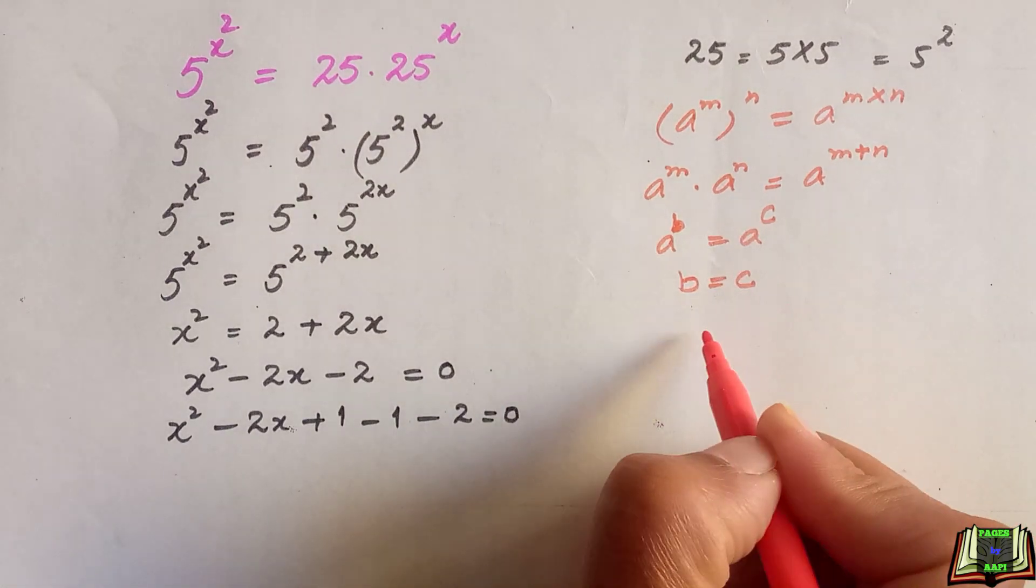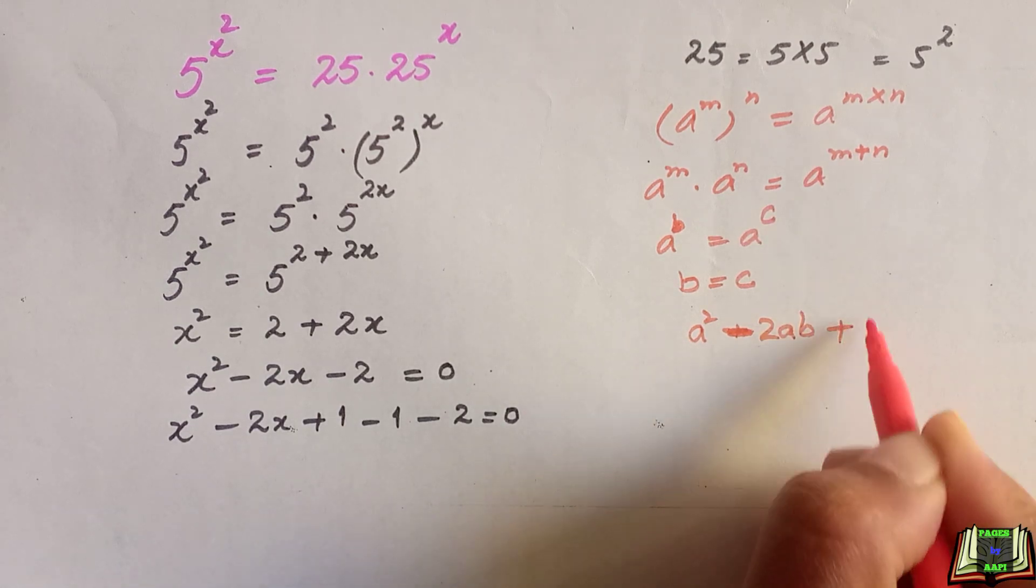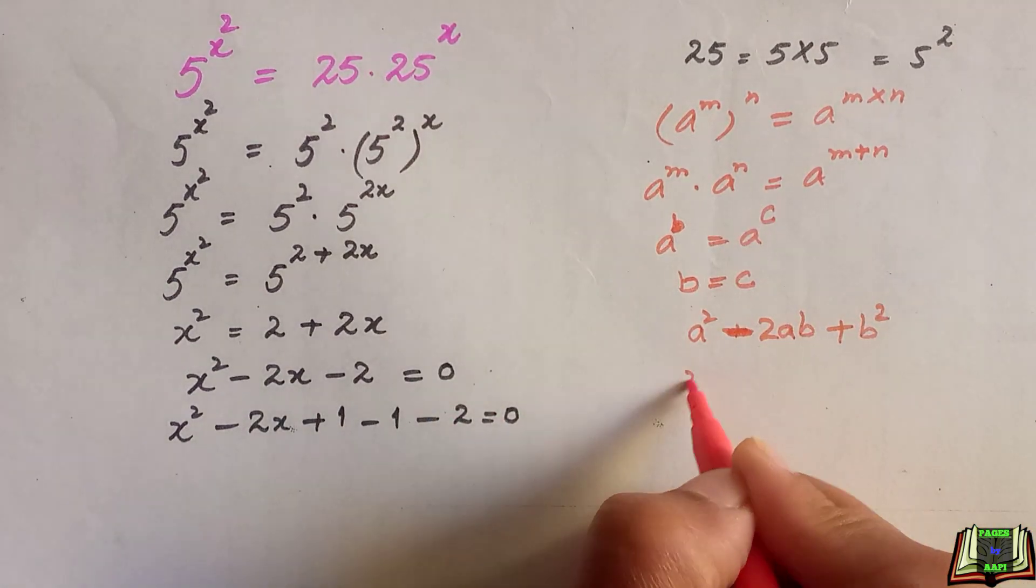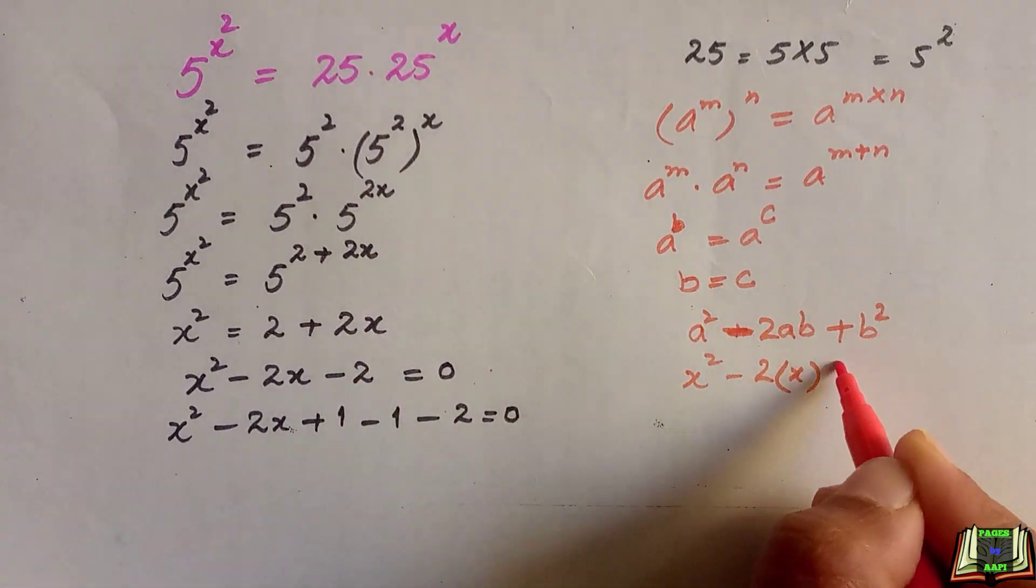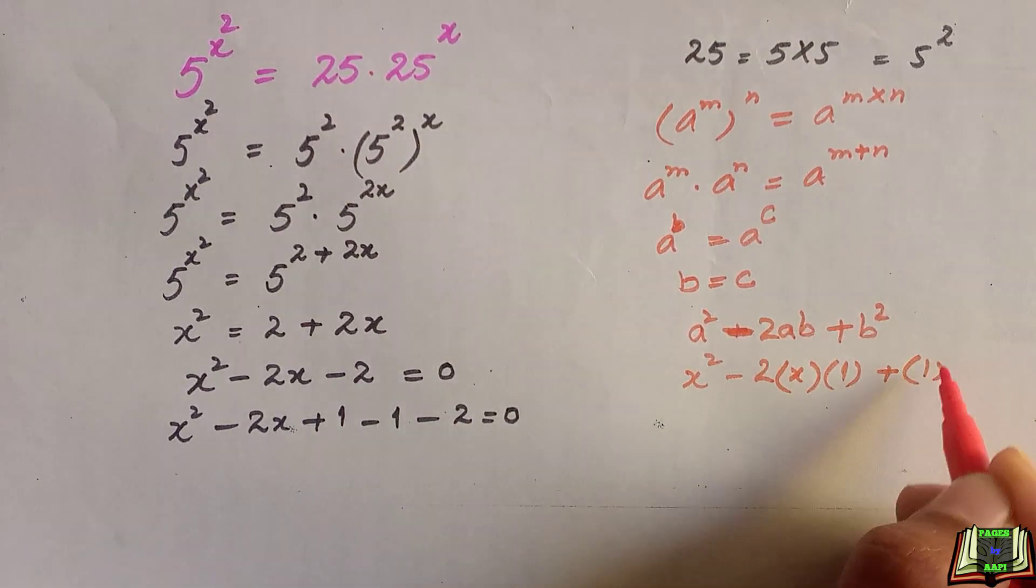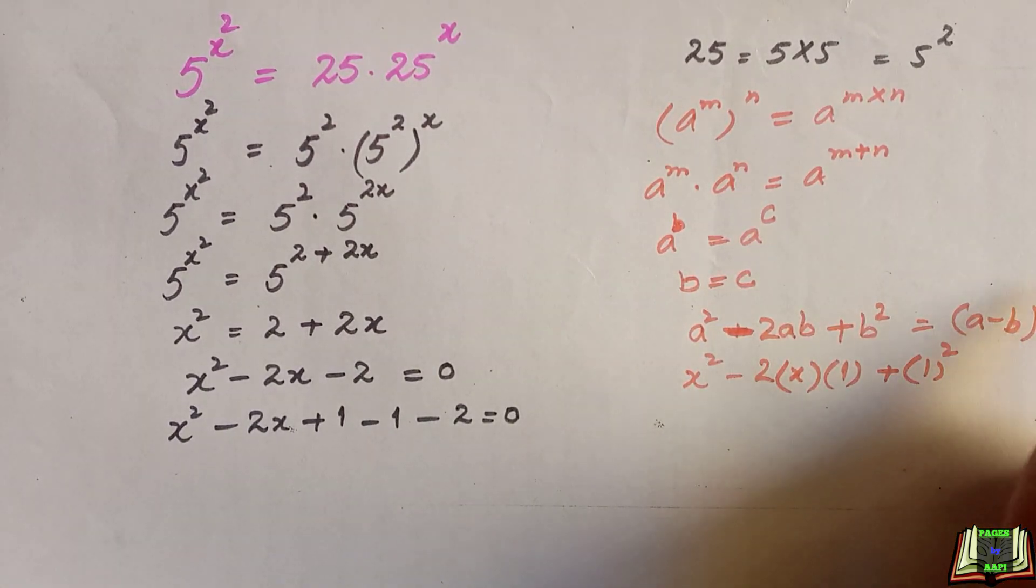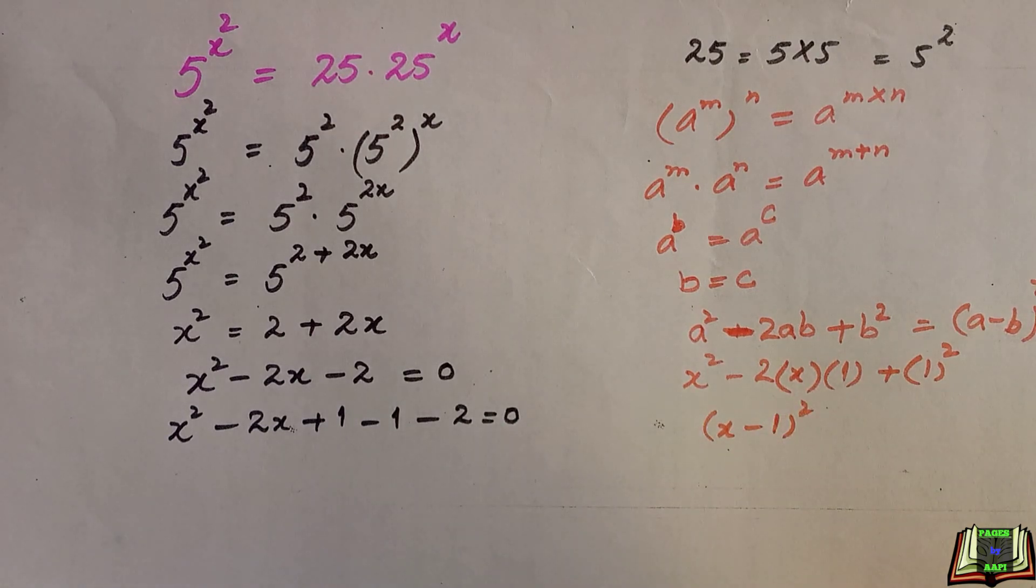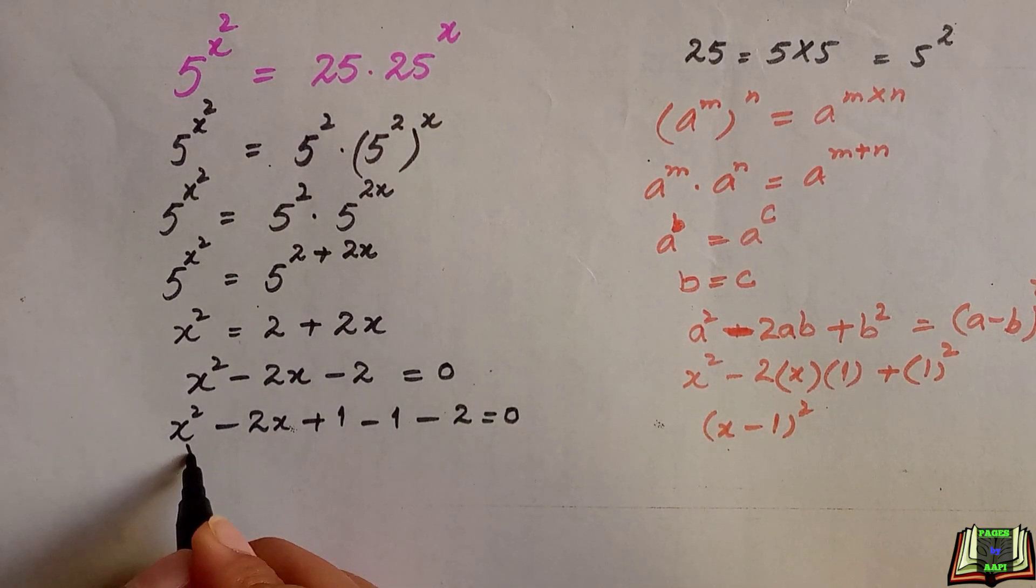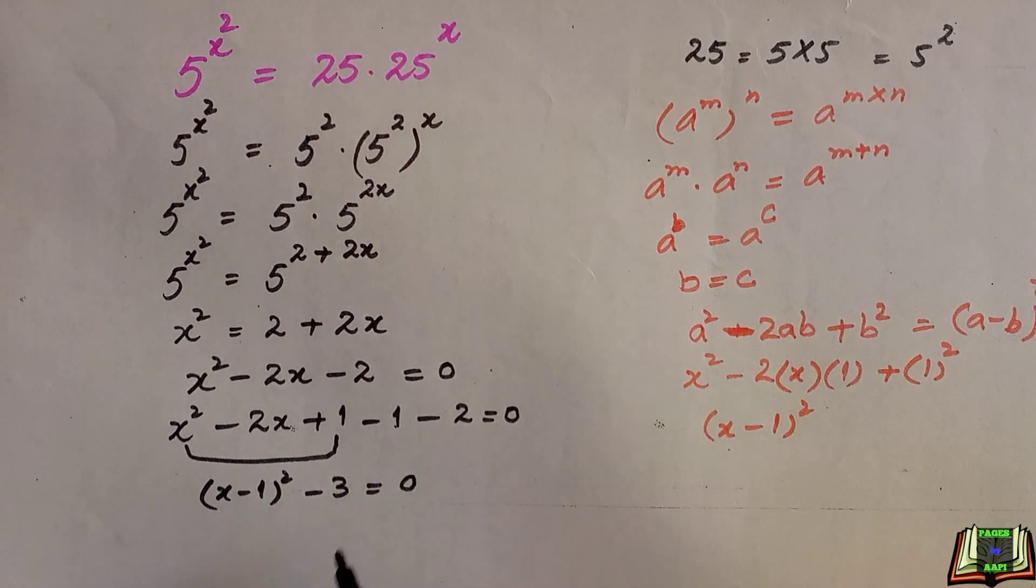We know an algebra identity a square minus 2ab plus b square. And if we see here a is x, minus 2ax, b is 1 here, plus 1 square. And this identity is a minus b whole square, so this is equal to x minus 1 whole square. We can say that this part x square minus 2x plus 1 is equal to x minus 1 whole square, and minus 1 and minus 2 is minus 3 is equal to 0.